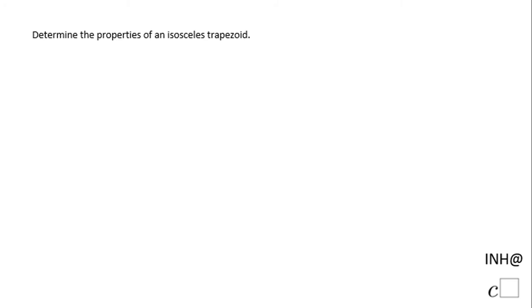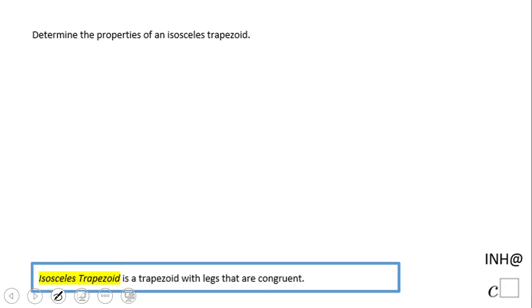Welcome or welcome back. I'm at C squared, and we're going to see the properties of an isosceles trapezoid. First, let's take a look at the definition of an isosceles trapezoid.